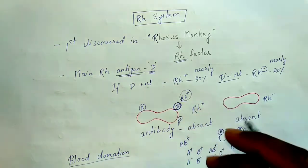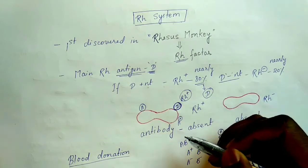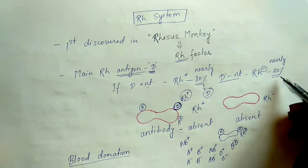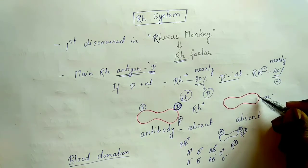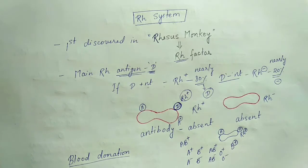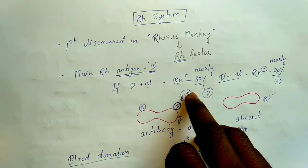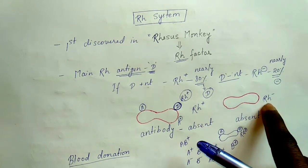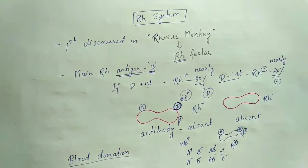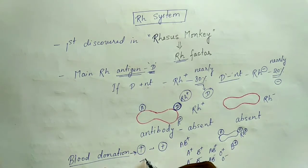Most of the population — nearly 80 percent — is Rh positive, meaning this 80 percent has D antigen present in their RBC. Nearly 20 percent are Rh negative, where D antigen is not present. To summarize: if D antigen is present in the RBC, it is an Rh positive person; if there is no D antigen, it is an Rh negative person.